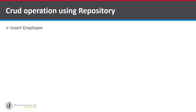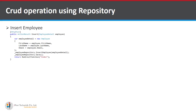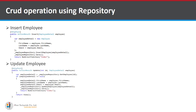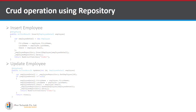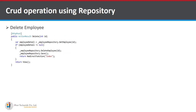To insert an employee, create an object for EmployeeRepository and call InsertEmployee, passing the model object. To update an employee, call UpdateEmployee and pass the object. To delete an employee, first get the employee by ID then remove it using DeleteEmployee. For references you can use tutorialspoint.com, entityframeworktutorial.net.